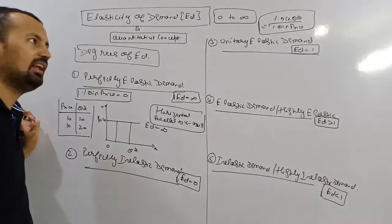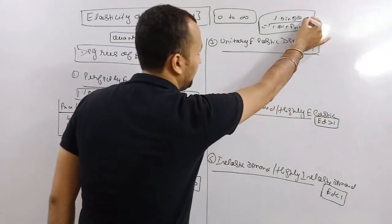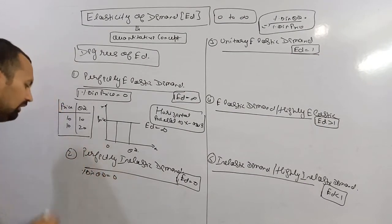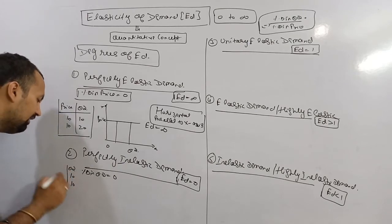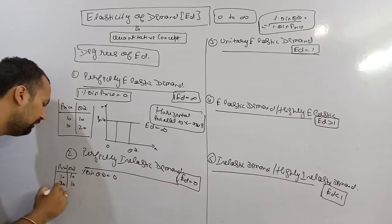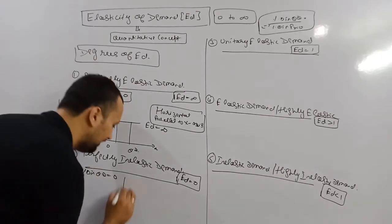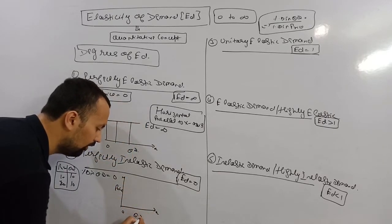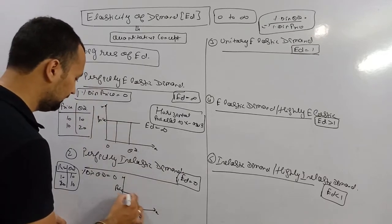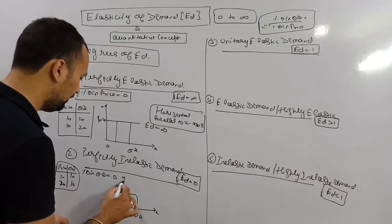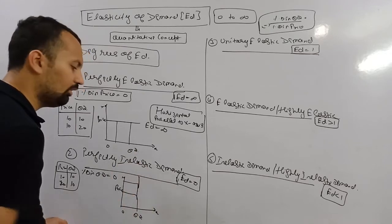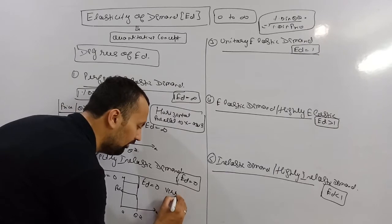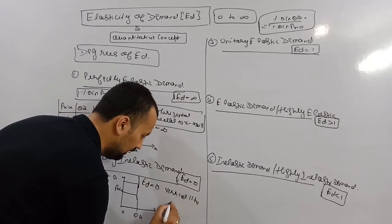The next situation is perfectly inelastic demand, where the answer is Ed equals 0. This occurs when the percentage change in quantity demanded is 0. In the schedule, there is no change in quantity demanded whether price rises from 10 to 20 or falls. On the diagram, with price on the y-axis and quantity demanded on the x-axis: when price is 10, demand is 10; when price is 20, demand is still 10. There is no change in quantity demanded, so Ed equals 0. The curve is vertical, parallel to the y-axis.